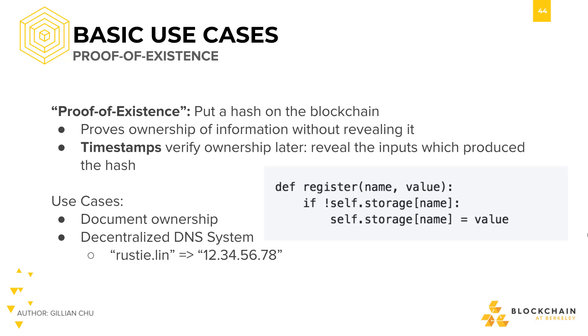We can prove that we own some document at some point in time through a commitment scheme. Hash the document with some random number, then you have your hash commitment. Reveal the inputs later on to prove your ownership.